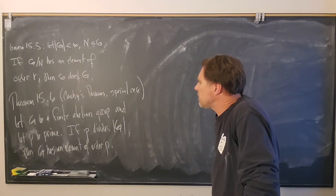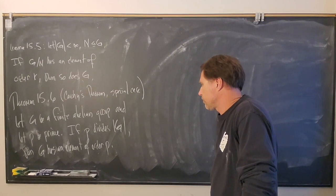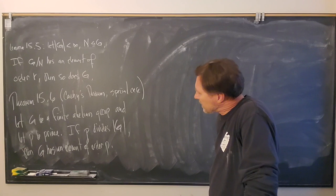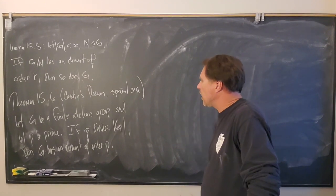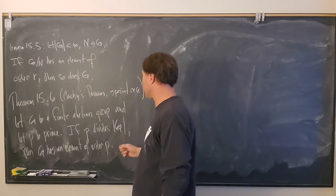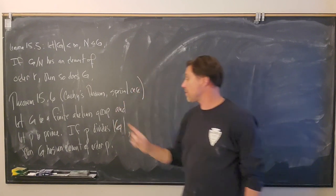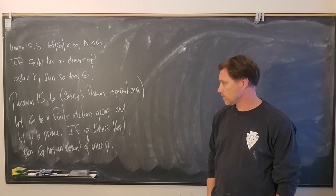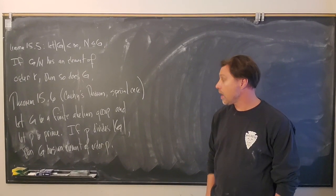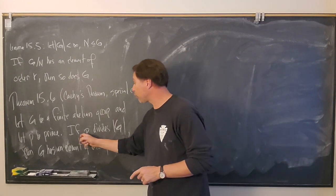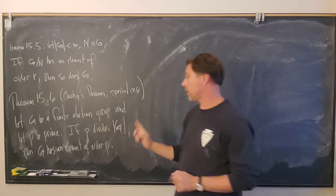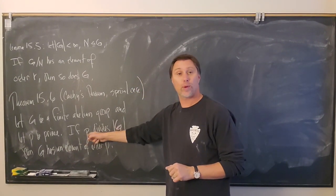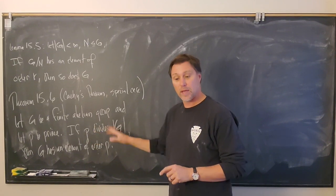Now we know this is not true in general — just because a number divides the order of the group does not mean you have an element of that same order. But in the case of a prime divisor, you are guaranteed to have an element of that order. The fact that p is prime is what makes this work.